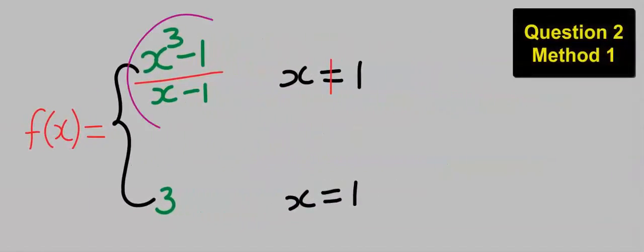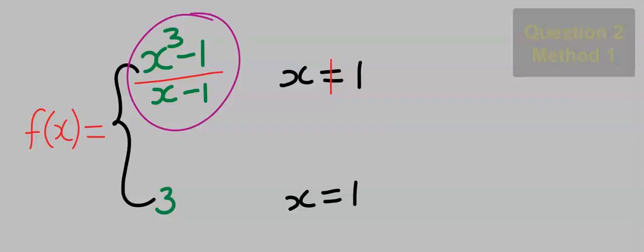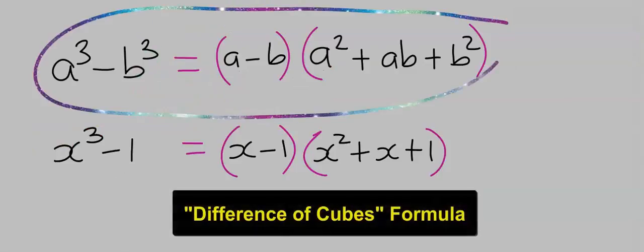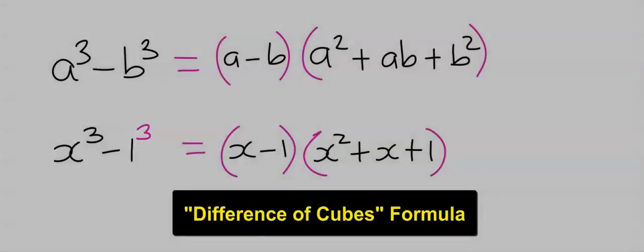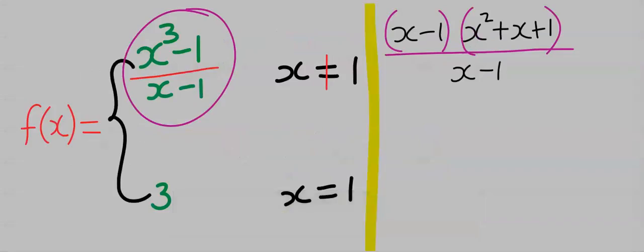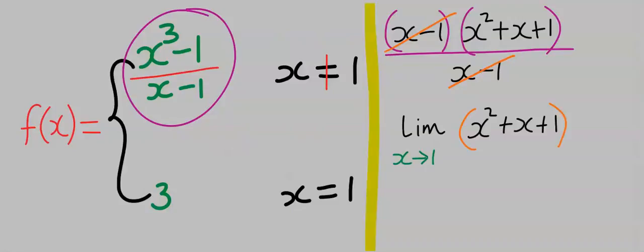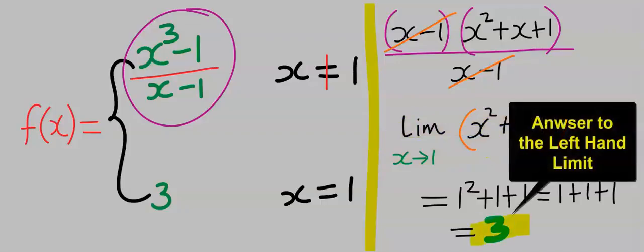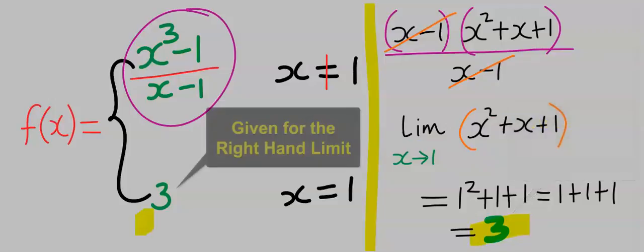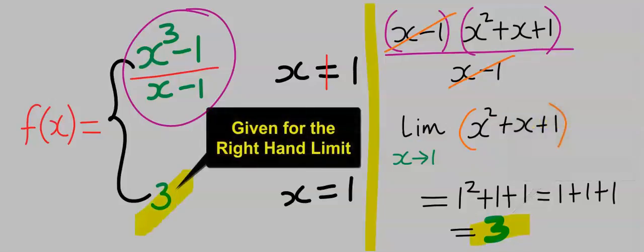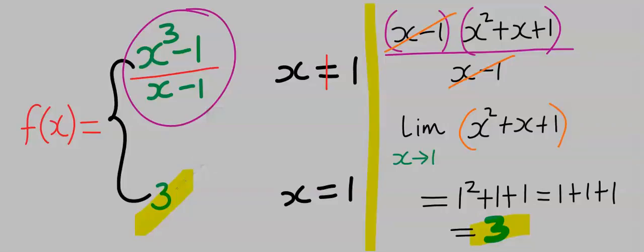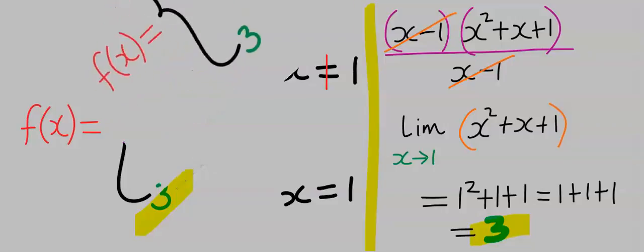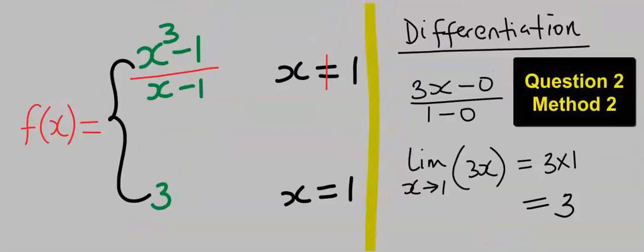Next, to solve this problem we are going to apply the difference of cubes formula. Applying this formula, this will cancel with this. Taking the limit of the remaining function as x tends to 1, we got 3. This answer is for the left-hand limit. However, the right-hand limit also gave us 3, so we can say this limit exists. If you apply differentiation, you're going to get the same answer.